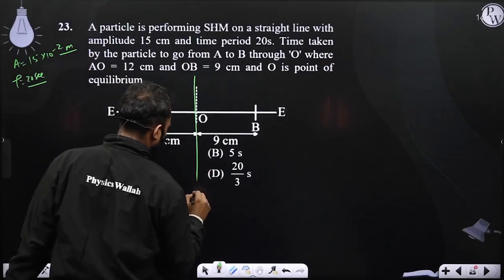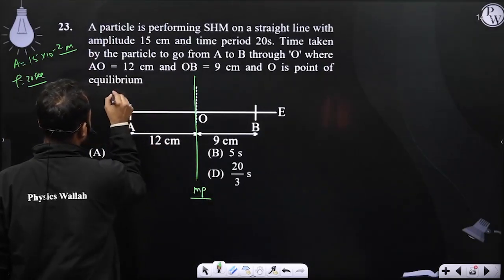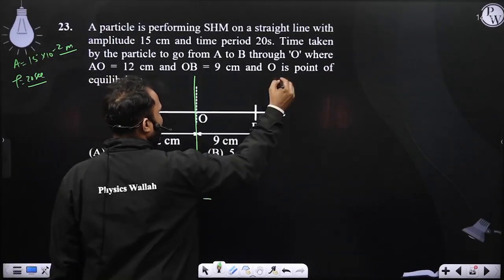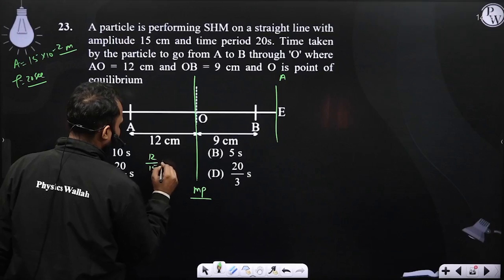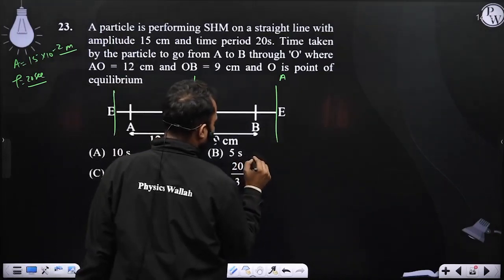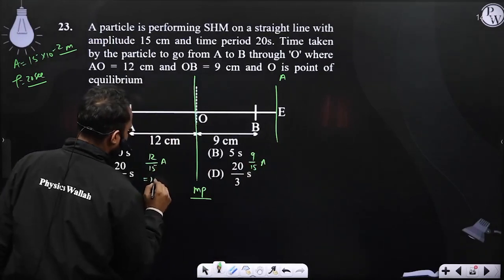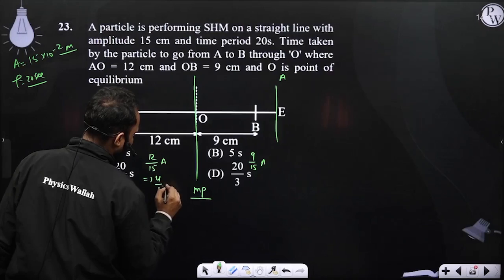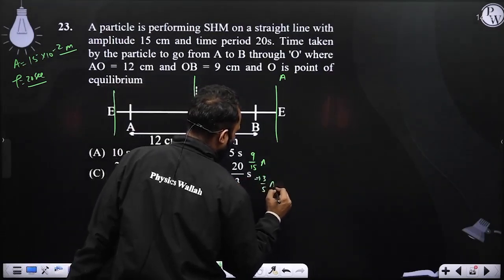I thought that this is the mean position. If I recall the total extreme A, basically it will be 12 upon 15 A and it will be 9 upon 15 A, which means it is nothing but 4 by 5 A and it will be nothing but 3 by 5 A.